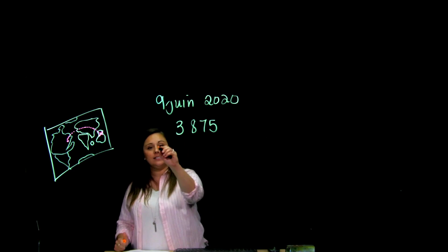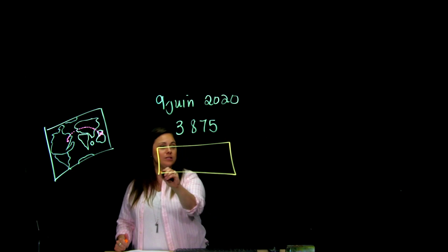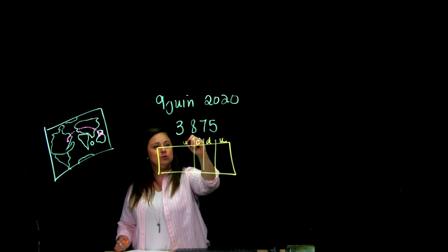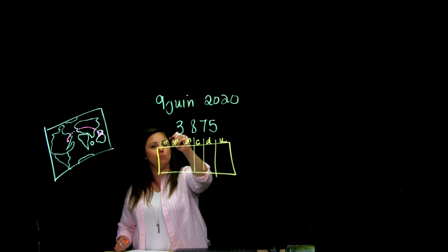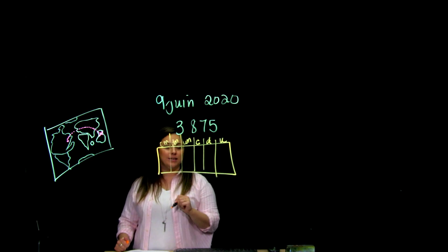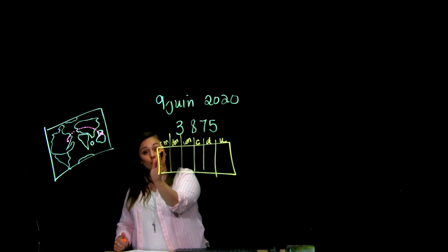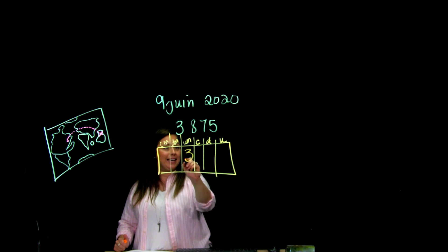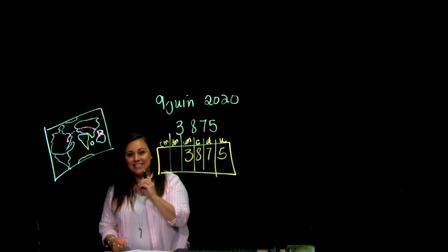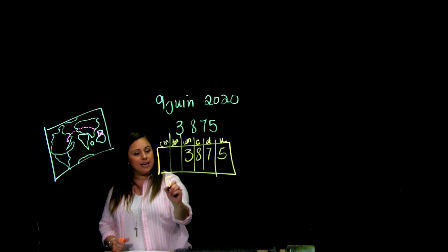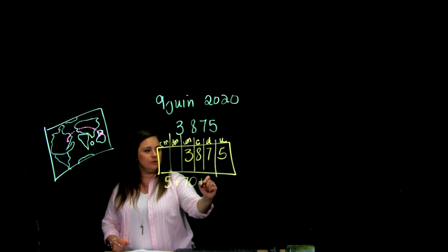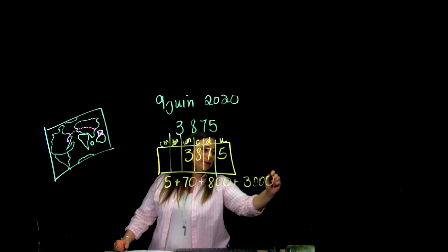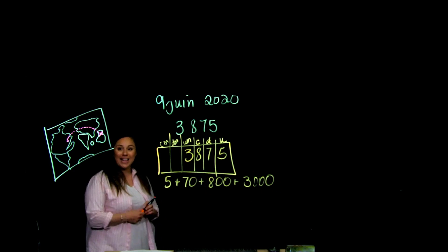Tu peux, tout d'abord, l'inclure dans un tableau de numération. C'est toujours plus facile. Alors j'ai les unités, les dizaines, les centaines, les unités de mille, les dizaines de mille, les centaines de mille, et on s'arrête là au deuxième cycle. J'ai cinq unités, sept dizaines, huit centaines, et trois unités de mille, c'est donc trois mille. Ça va pour la décomposition.